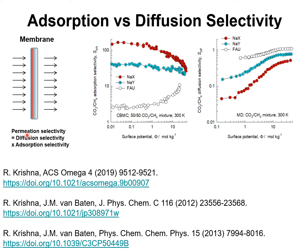Cation exchange faujasite zeolites also find use in membrane constructs, in which a thin layer — typically 50 micrometers — of the zeolite is used as a perm-selective device to separate gaseous mixtures. The permeation selectivity is a product of the diffusion selectivity and the adsorption selectivity. Let's look at the relative values of the adsorption selectivity and diffusion selectivity for all-silica faujasite, NaY, and NaX.